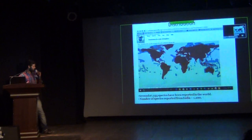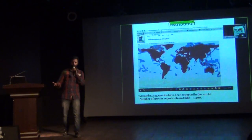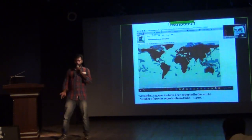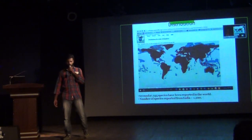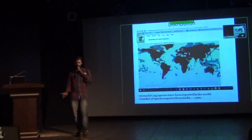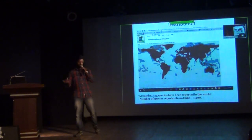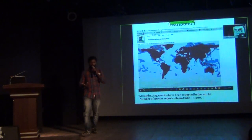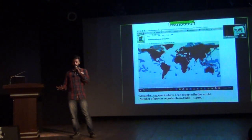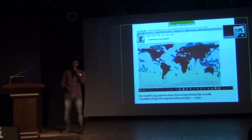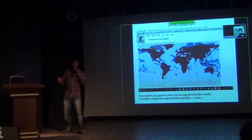Regarding distribution, around 27,235 species have been reported all over the world up to February 2016. But in India, only around 1,200 species have been reported, with around 200 species conflicted. However, considering the heterogeneity of India, we have concluded that at least 3,000 plus species could be reported from India. It is a potential area for taxonomists interested in working with these organisms.